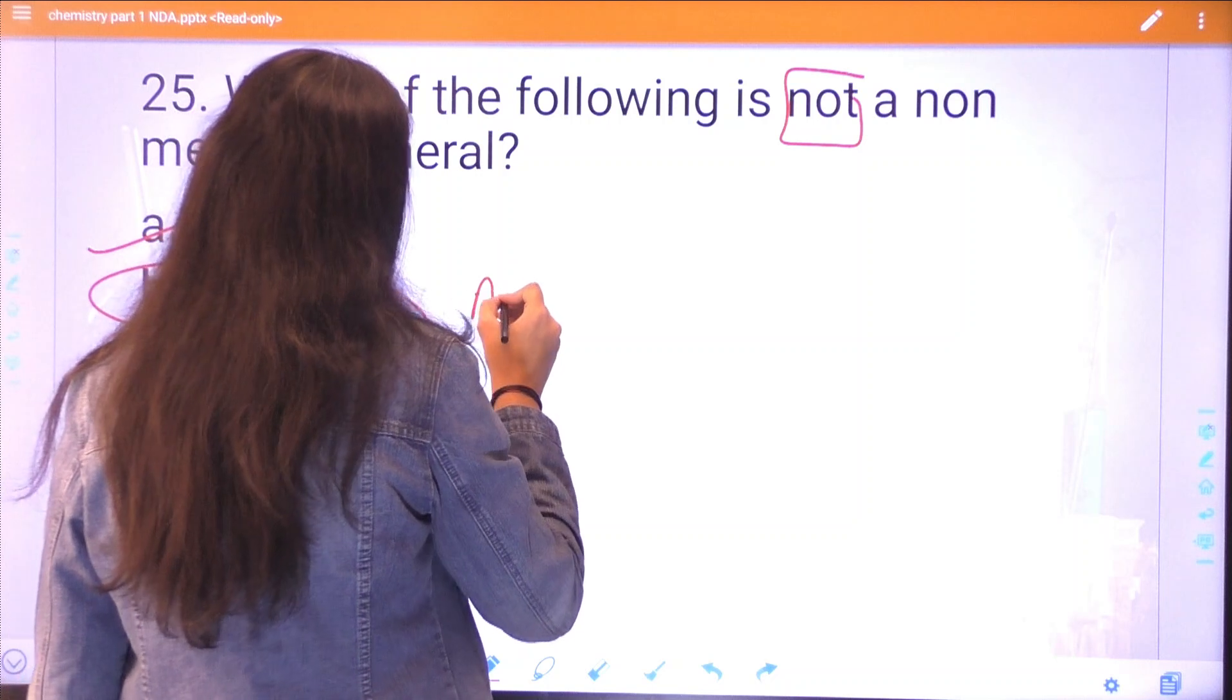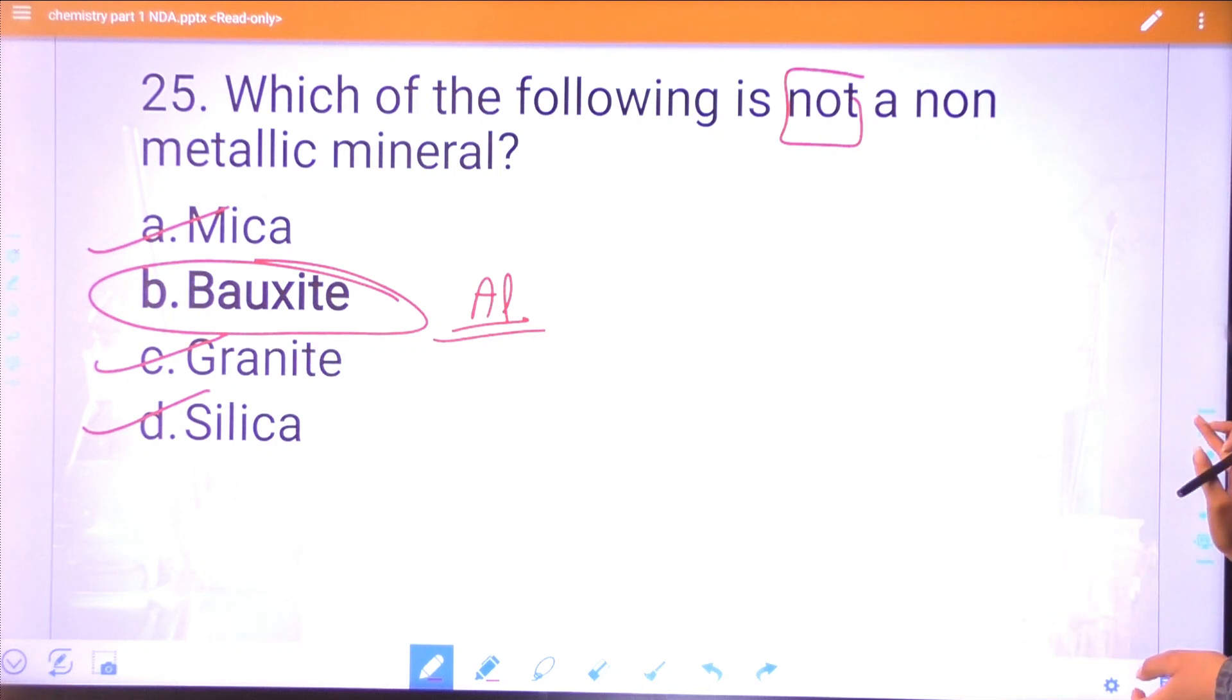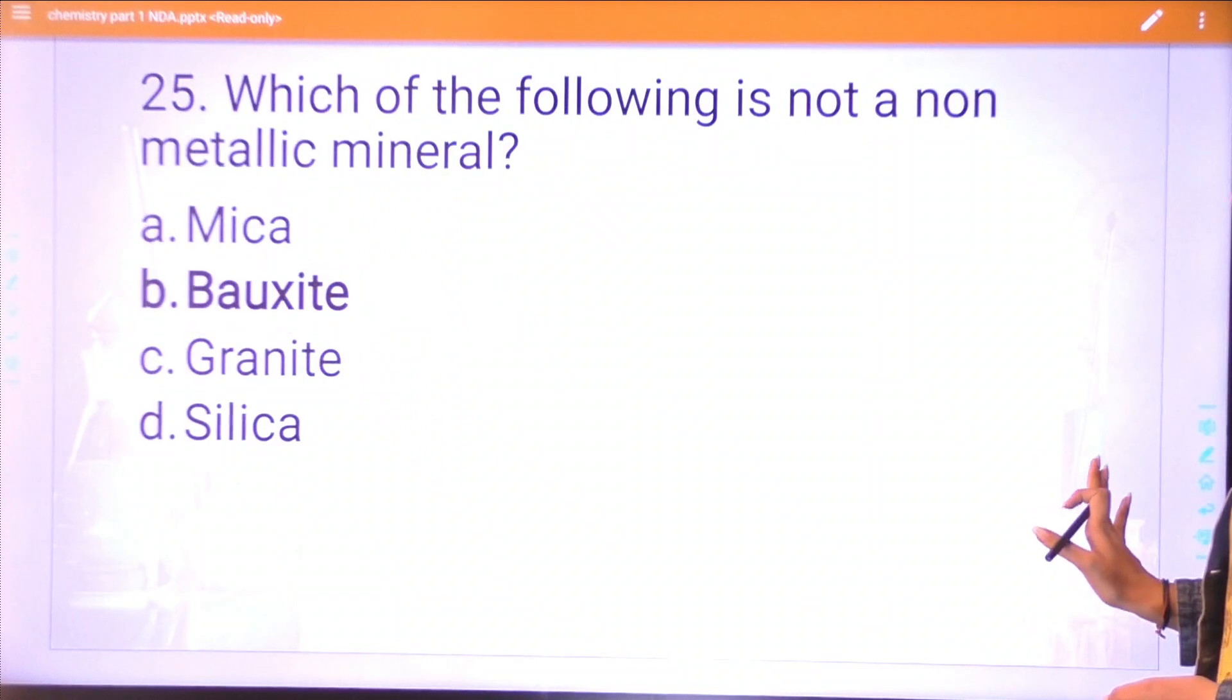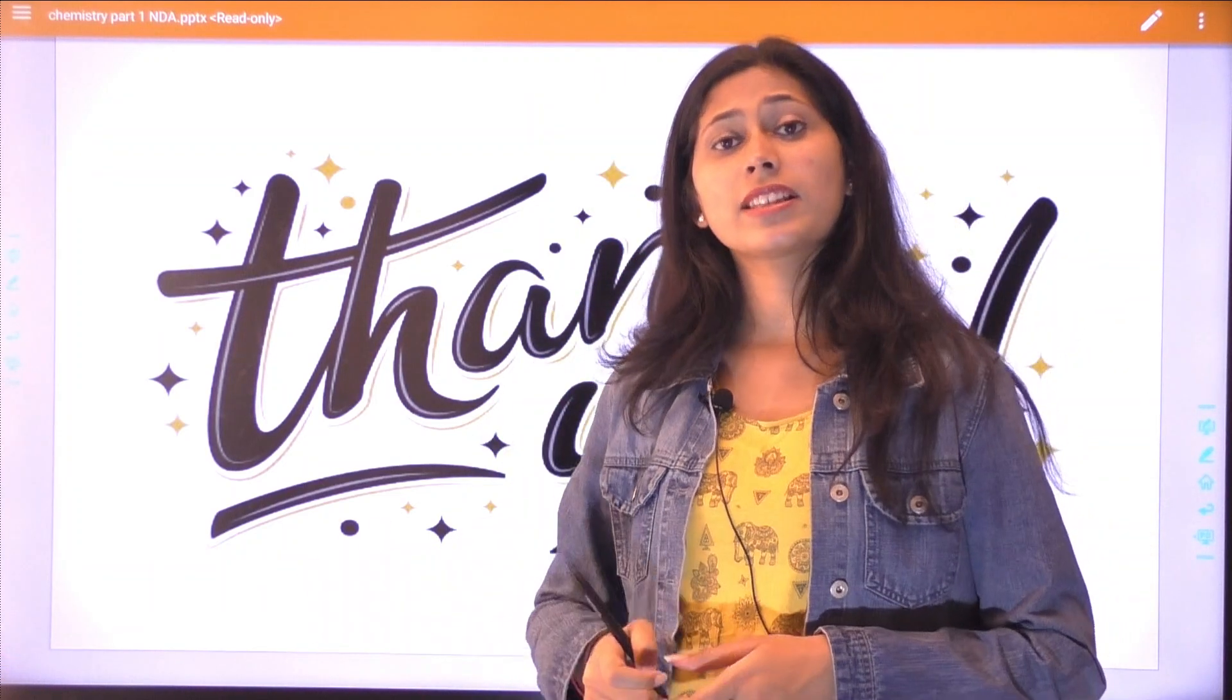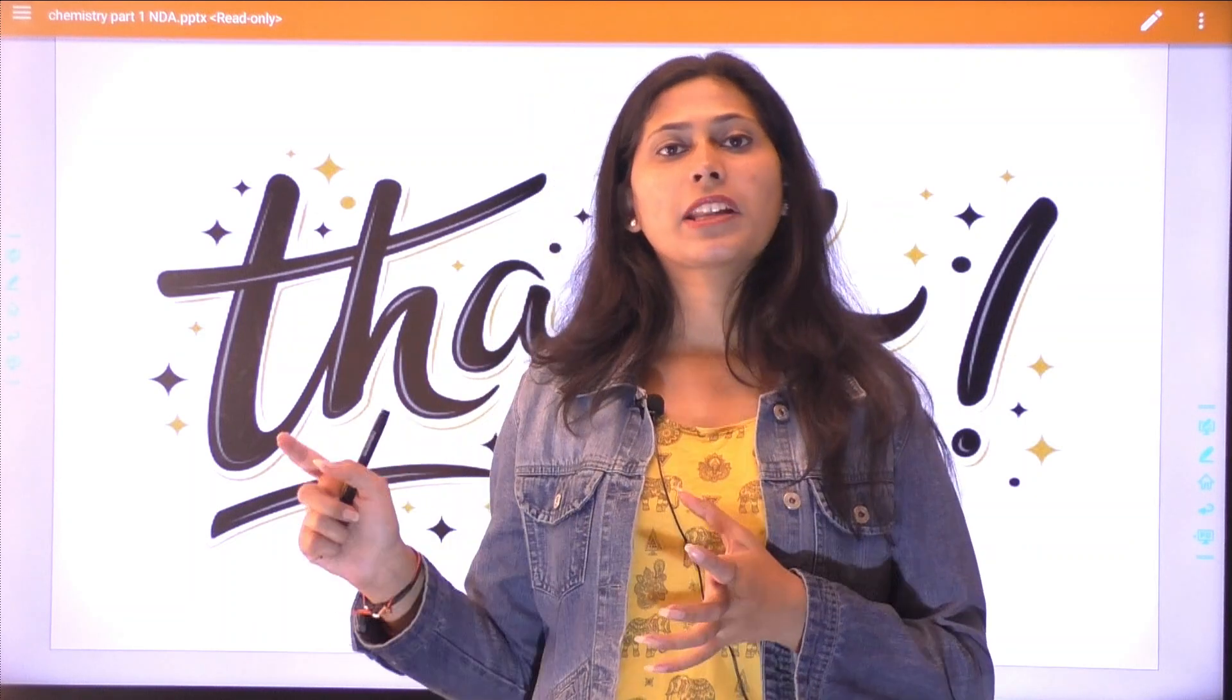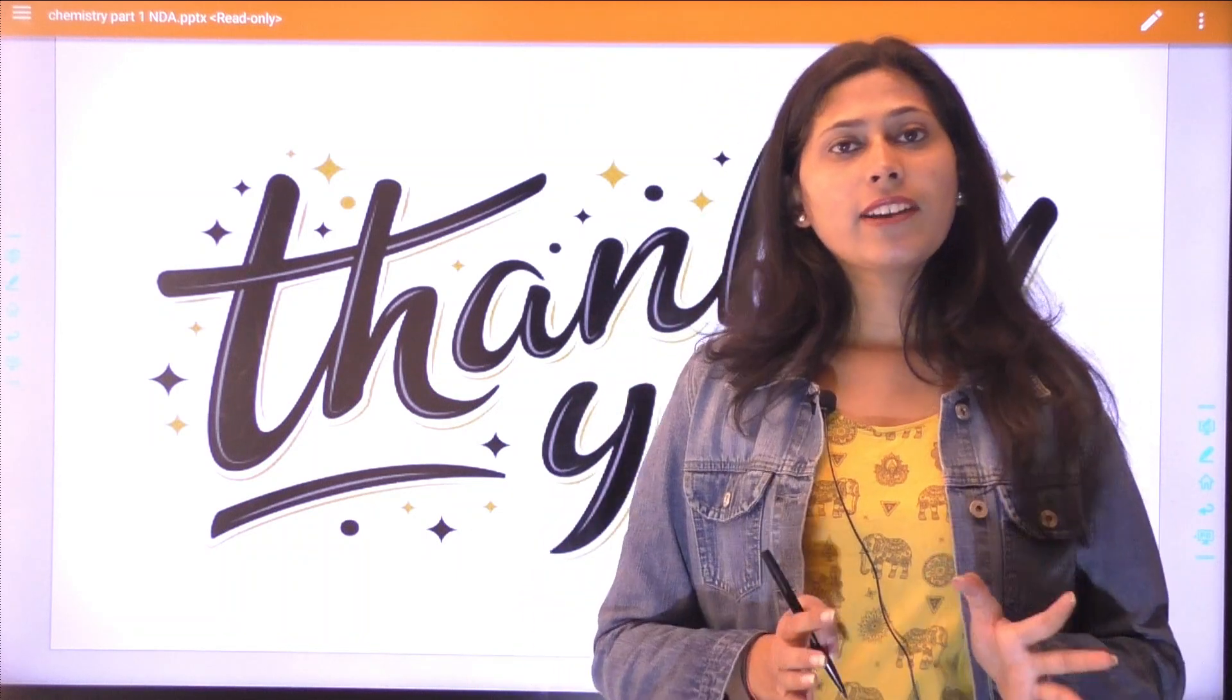I hope these 25 questions are clear to you. These are all your previous year questions, so you have an idea which chapters the questions come from. Ionization has come, Lewis acid and Lewis base has come, pH questions are there, metallic minerals and non-metallic minerals. We have to focus on these topics. We are done with part 1 of chemistry. Now we will come with part 2 of this lecture in which we will discuss the rest of 25 questions.